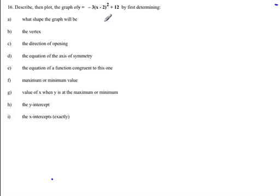Alright, this question is a review of a lot of the basics of what you should understand from quadratic equations. So we've got y equals negative 3 times x minus 2 squared plus 12. And first of all, what shape the graph will be?